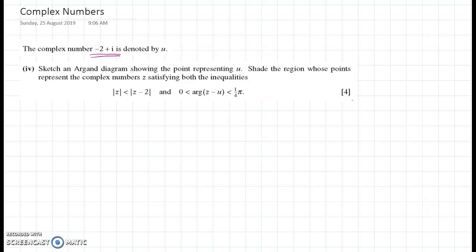We're going to sketch an Argand diagram showing the point representing u first of all. So we'll just put our axes in and then mark in where minus two plus i is for u. So we've got minus two plus i just here. We'll give that a little label of u.